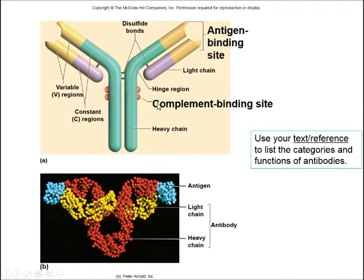You'll also see on these antibodies these complement binding sites. These are the same complement proteins we talked about in nonspecific resistance. These complement proteins actually have a site that they bind to on the antibody. Because these are nonspecific, they're going to set off the processes and go after those substances no matter who they are. We're bringing them along to fortify our response. This is adaptive immunity, but we're now incorporating some of that nonspecific into the picture by bringing our complement proteins right along with us.